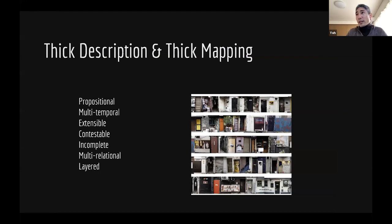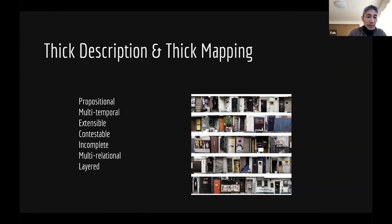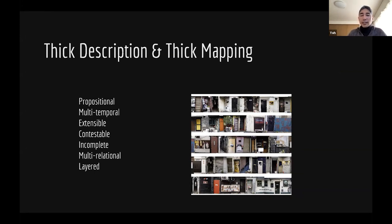If I were to describe thick mapping — which comes from thick description — and give it some adjectives, it would be propositional, very temporal, multi-temporal, extensible, full of contestation, and never complete. It's multi-relational, multi-perspectival, and layered — though not layered in the sense of modern-day GIS.